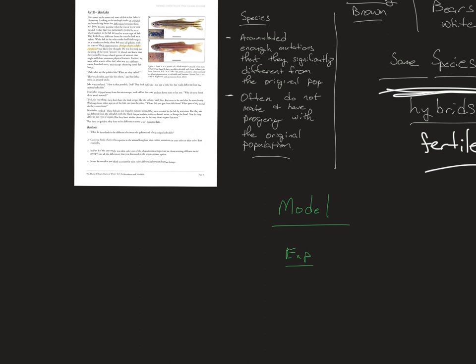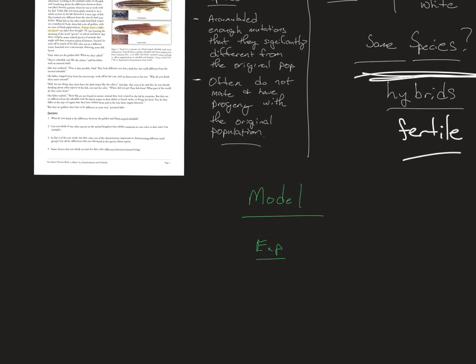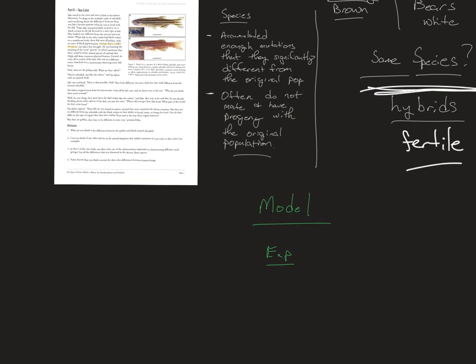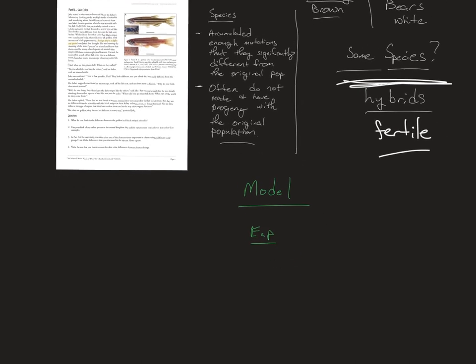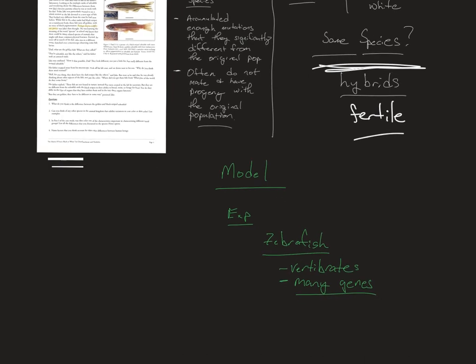Zebrafish produce a lot of babies and don't have as much ethical consideration attached to experimenting with them as one might find using a dog, a chimpanzee, or obviously a human. So we can experiment with zebrafish a little more freely. Why experiment with zebrafish at all when talking about humans? Because zebrafish have a lot in common with humans — we're both vertebrates, and they share many genes that humans have.